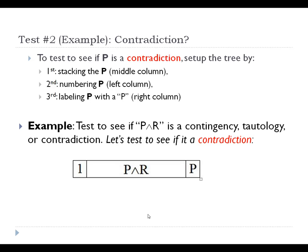For example, to test to see if P and R is a contradiction, tautology, or contingency, we first run the contradiction test by simply writing P and R down at line one, numbered and labeled with a P.